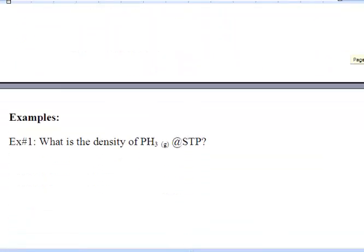So we're going to do a few examples here. What is the density of PH3 gas at STP? Well, whenever we hear the word density, we're going to go density equals mass over volume. Now we have the density of this gas at STP. So we know at STP we're occupying 22.4 liters.